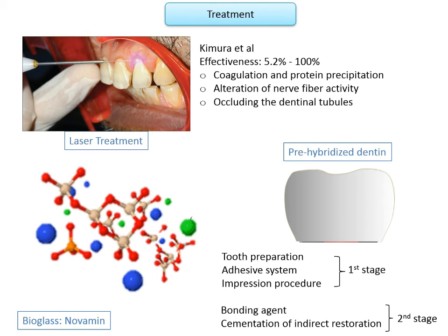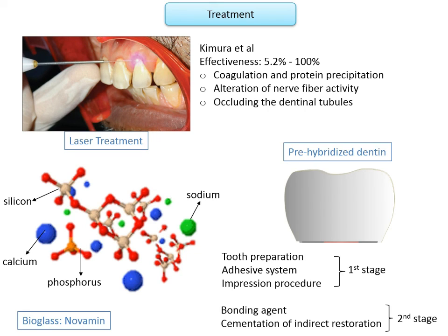Bioglass: NovaMin, the active ingredient in Dentsply's bioglass agent, is a bioactive glass with fine particulate median size of less than 20 micrometers, composed of calcium, phosphorus, sodium, and silicon. When exposed to an aqueous environment, it releases calcium and phosphate ions; through several reactions starting from nucleation sites, it crystallizes into hydroxyl carbonate apatite — equivalent to hydroxyapatite in biological behavior. It is acid resistant, offering long-term relief and alleviating hypersensitivity.